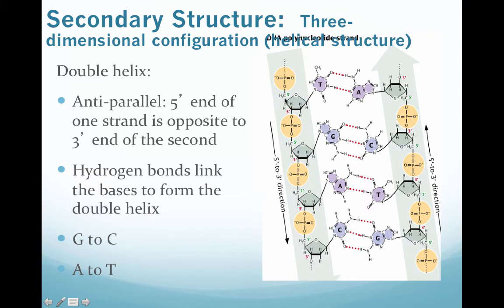In this example, on the strand that is on the most left in this figure, we've got the five-prime structure up at the top, which means the three-prime is at the bottom. However, on the opposite side, the rightmost strand starts with a three-prime end at the top and the five-prime down at the bottom. So they are anti-parallel in configuration. Keep in mind, A's bond to T's via two hydrogen bonds and G's bond to C's via three hydrogen bonds.